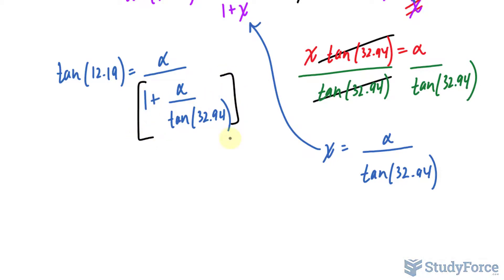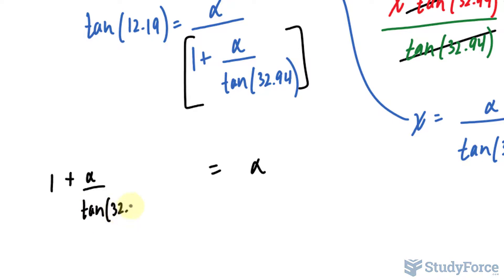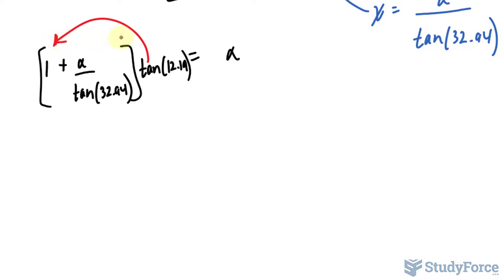So if I multiply the right side by this expression, I end up with simply alpha on the right side. But I also have to do it on the left side. So I end up with 1 plus alpha over tangent 32.94, all of that being multiplied to tangent of 12.19. I do need to isolate for alpha, so I will expand this expression now, multiplying tangent of 12.19 to both of these terms. I end up with tangent 12.19, that's that very first term, plus tangent, again, 12.19 times alpha over tangent of 32.94. And all of that is equal to alpha.